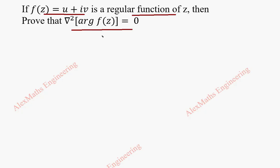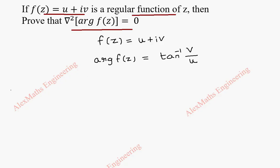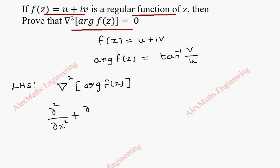f is given as u plus iv. The argument of f is tan inverse of the imaginary part v divided by the real part u. Now coming to the left hand side of the expression, we have del squared of argument of f. The del squared operator is dou squared by dou x squared plus dou squared by dou y squared, applied to tan inverse v by u.